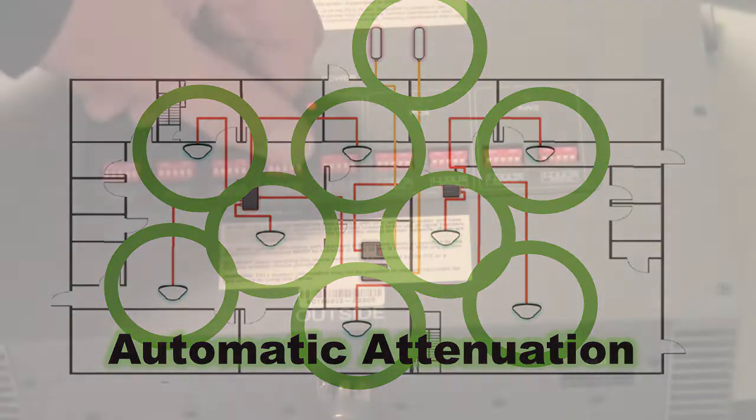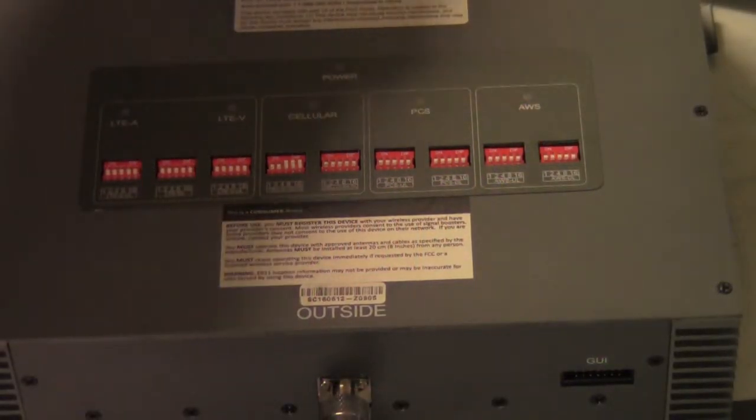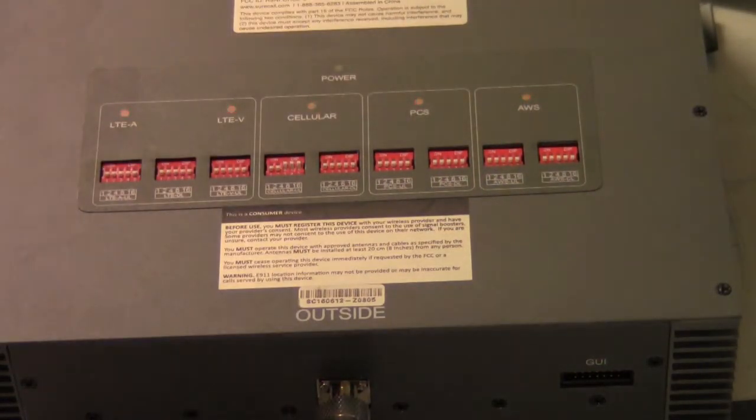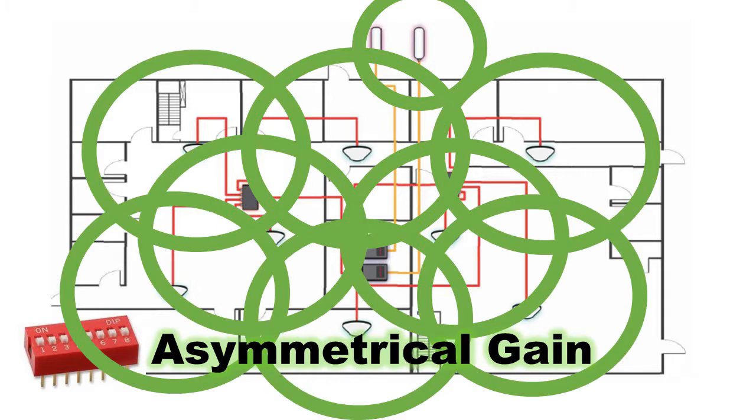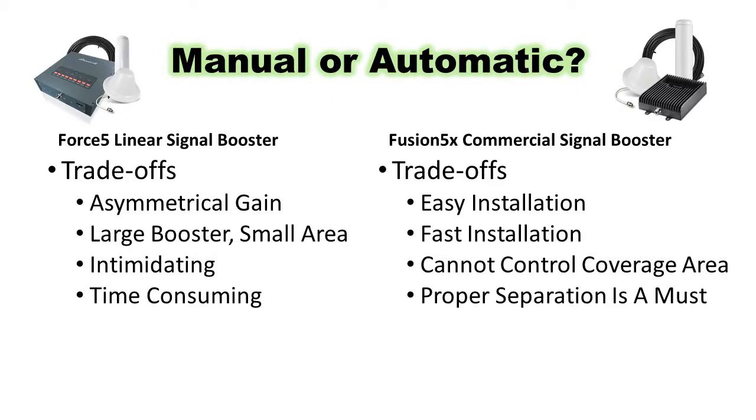On a booster where there are DIP switches that control the uplink and the downlink separately, you have the ability to create what is called asymmetrical gain. This means you can reduce the amount of incoming signal without sacrificing indoor coverage to remedy things like overpowering and inadequate separation.